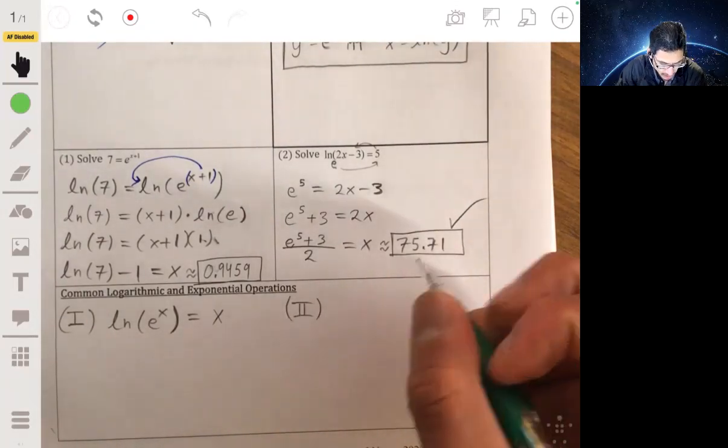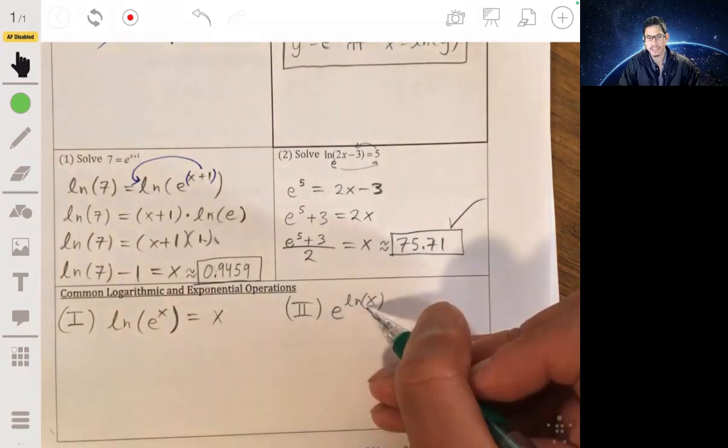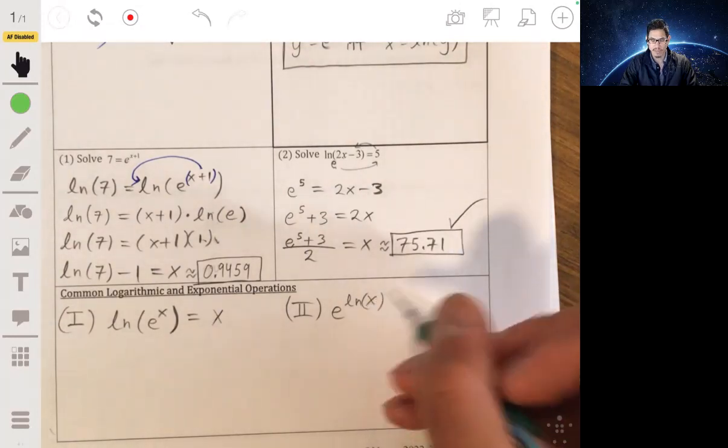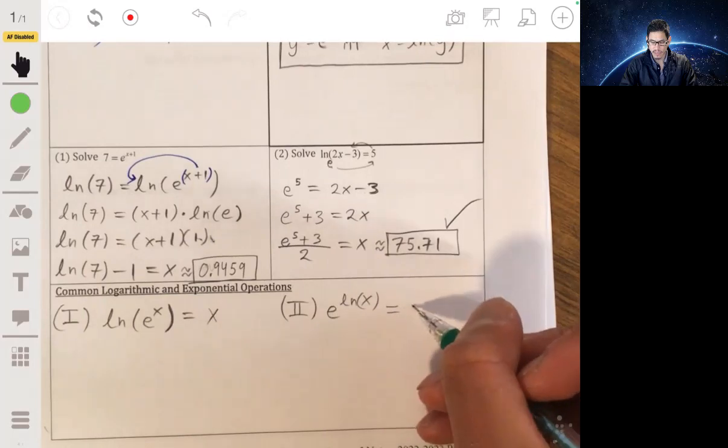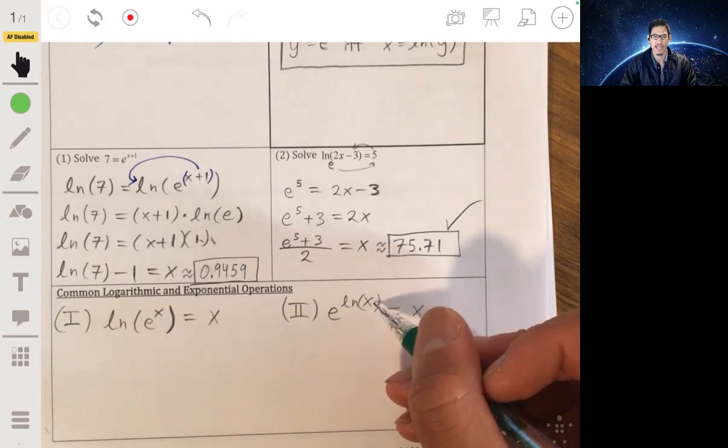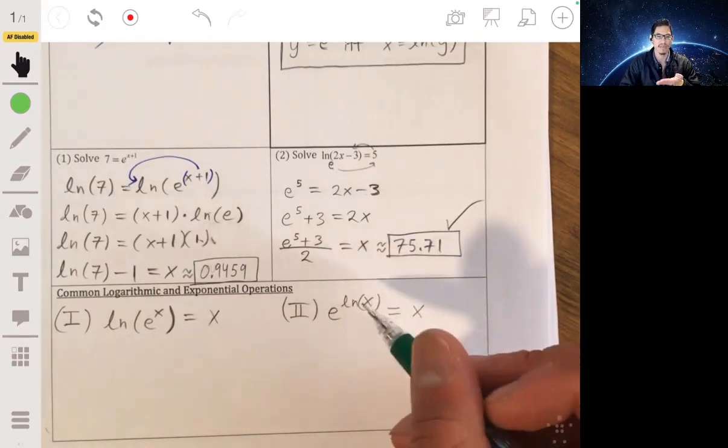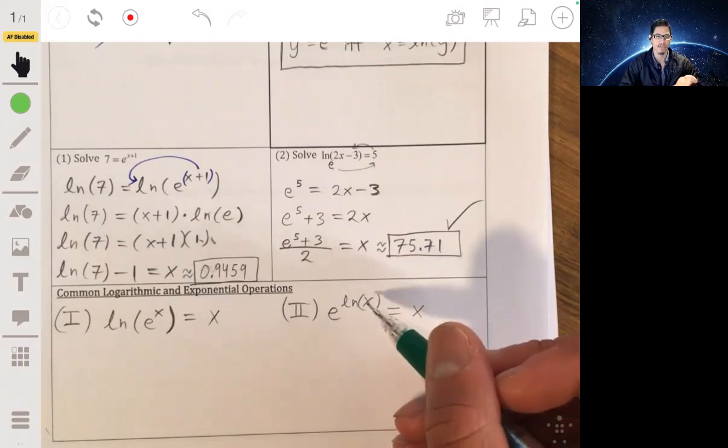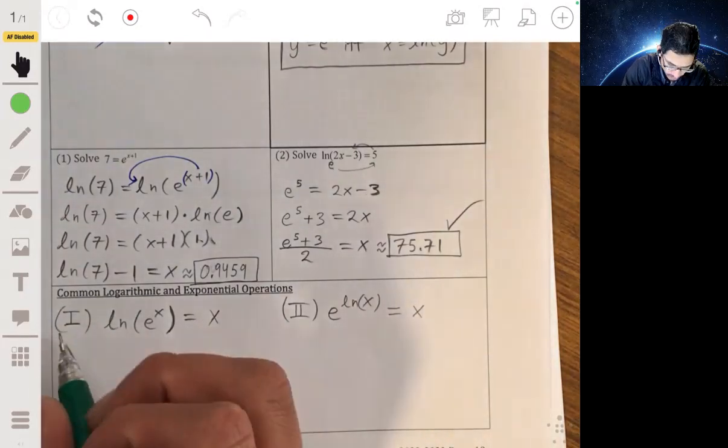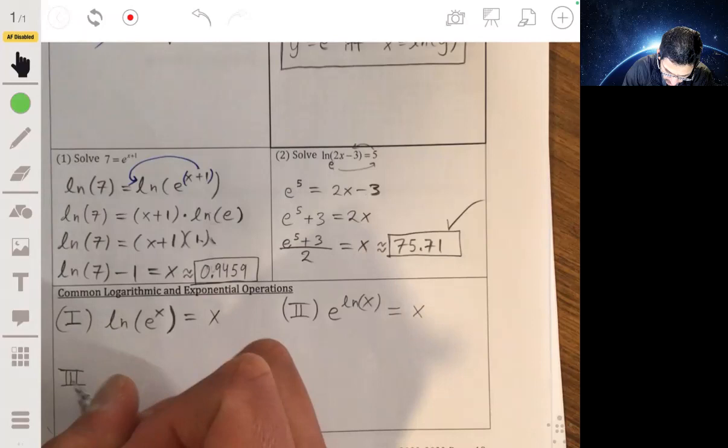Second property we got, if we have e raised to the natural log of x, so e being raised to a logarithm with the same base, this just becomes x. It just becomes whatever the input here is. If it's like 10, if x is 10, it would just become 10. This is basically saying e being raised to the logarithm of itself equals whatever the input would be.